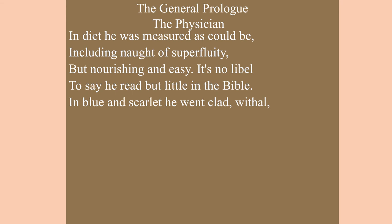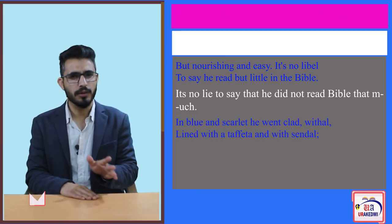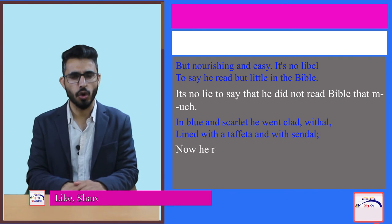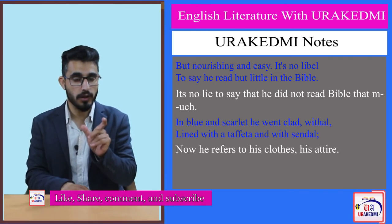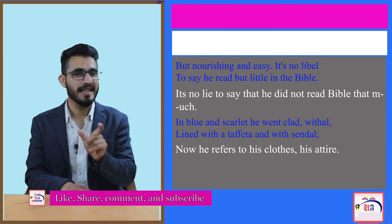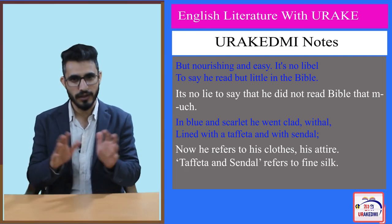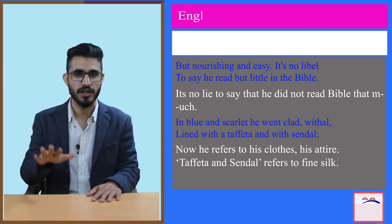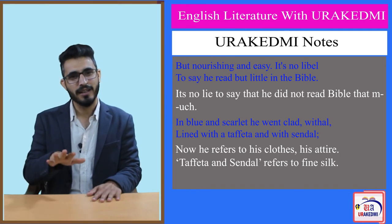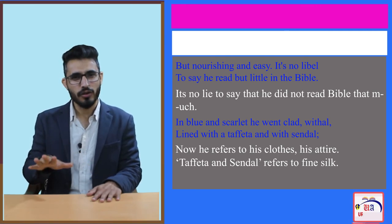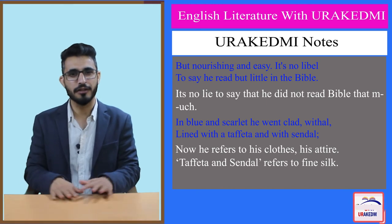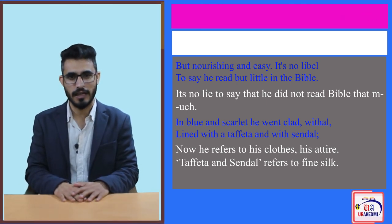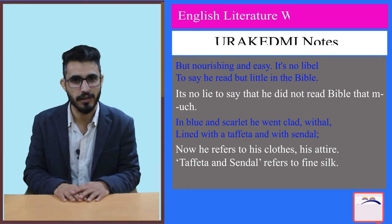'In blue and scarlet he went clad with all, lined with taffeta and with sandal.' Blue and scarlet means blue and red. Taffeta and sandal refer to fine silk. The attire he wore was made of the finest rich silk, indicating he was a rich man who could afford the best clothes of medieval times.